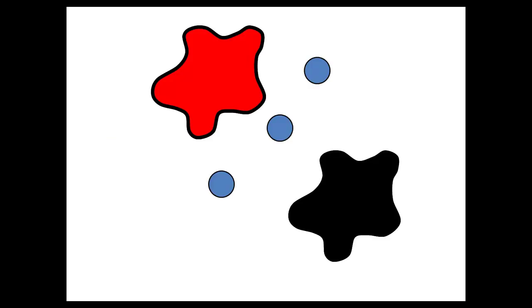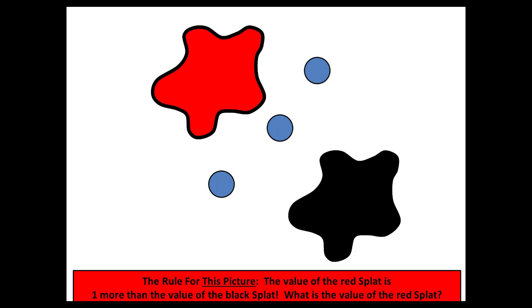Every level begins with a blank screen. On the first click, several things appear at the same time. You can see the red splat, a black splat, and some dots. Then on the next click, the rule appears on the bottom. I recommend reading it very carefully. In this case, the rule for this picture: the value of the red splat is one more than the value of the black splat. What is the value of the red splat?